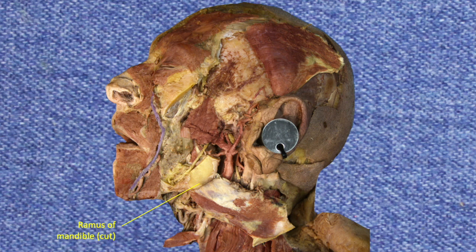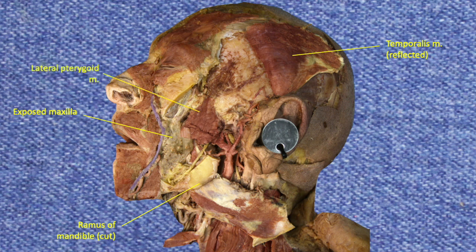The temporalis muscle with its attached coronoid process can now be easily reflected superiorly. We have now entered the infratemporal fossa. The ramus of the mandible also cracks some during the sawing, exposing the inferior alveolar nerve. The reflected temporalis muscle allows us to clearly enter the infratemporal fossa. The exposed maxilla is evident, albeit not yet cleaned of connective tissue. The two heads of the lateral pterygoid muscle are now exposed, and the medial pterygoid muscle deep to the lateral pterygoid can be observed. The inferior alveolar nerve is labeled, demonstrating that the ramus of the mandible was cut superior to the mandibular foramen.